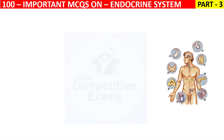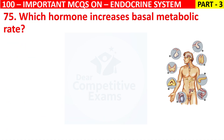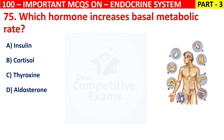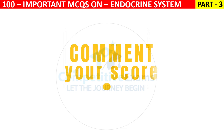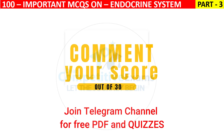Question 75: Which hormone increases basal metabolic rate? Your options are Insulin, Cortisol, Thyroxin, or Aldosterone. The correct answer is C, that is Thyroxin. Thyroxin increases oxygen consumption and metabolism. It supports growth and development. Keep watching and please comment your score out of 30 questions.